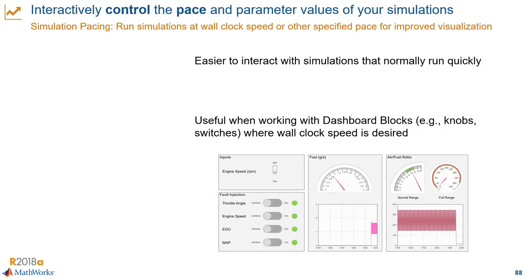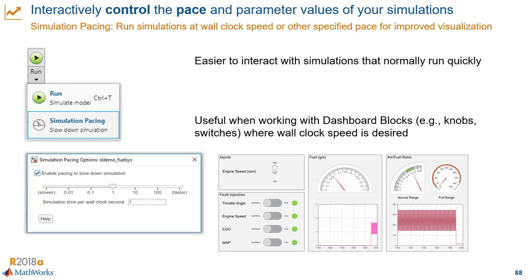A common use case is having dashboard blocks in a model to easily control parameter values and to see how a collection of signals respond. Sometimes Simulink runs too fast, so it can be hard to change inputs or visualize these dashboards in a way that makes sense. That's why we're giving you control over the simulation pace. All you have to do is click the Run dropdown in the tool strip, select Simulation Pacing, enable pacing, and configure the pace of the simulation relative to wall clock speed — just keep in mind that this pacing does not mean real time.